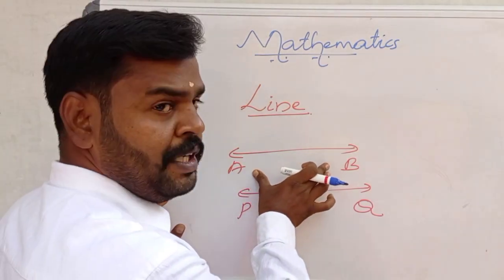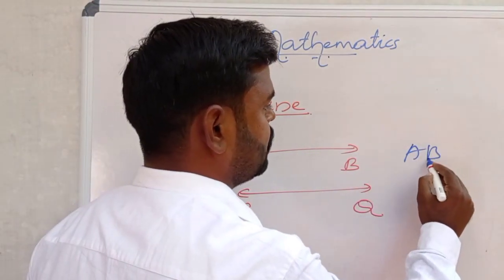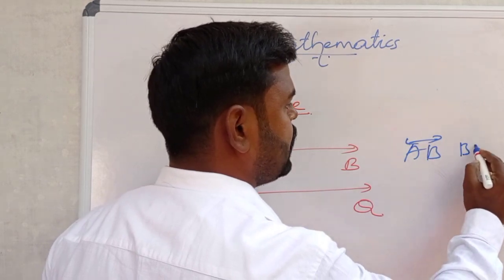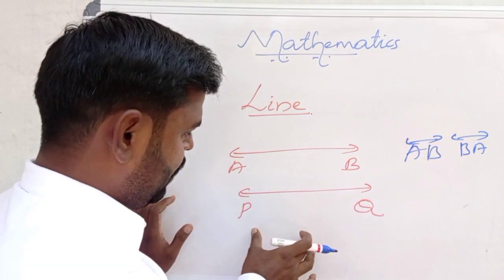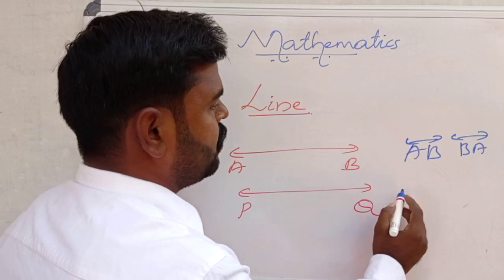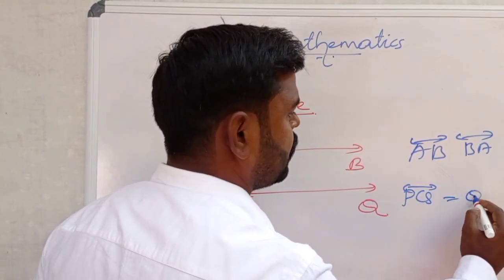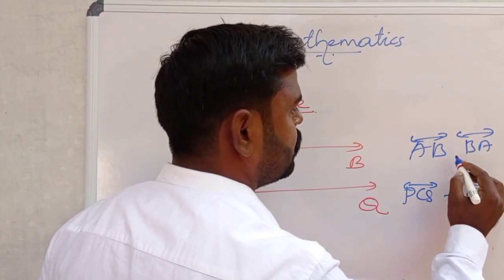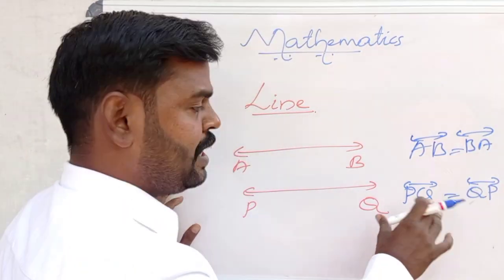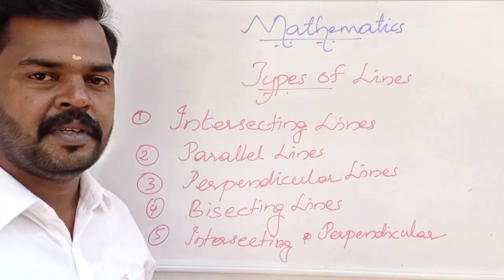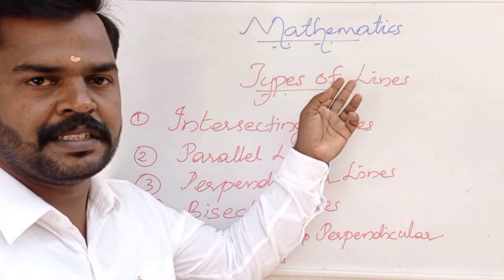Line AB can also be written as line BA, because two sides are extending. Similarly, line PQ equals line QP — both are equal, because two sides are extending in both cases.